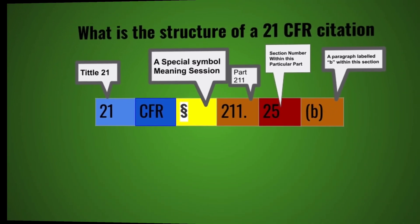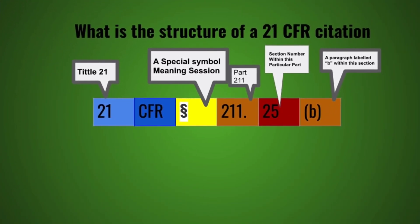What is the structure of a 21 CFR citation? Title 21 — CFR stands for Code of Federal Register. The symbol § represents 'section'. 211 is the part number, 25 is the section number, and B is the paragraph listed.